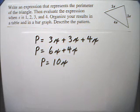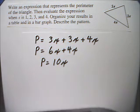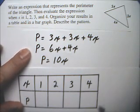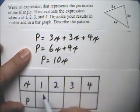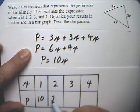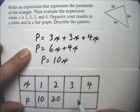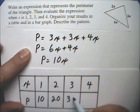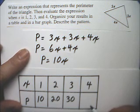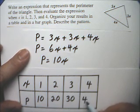So, organize your results in a table. Okay. Well, here's my table. And we said, when x is 1, this is 10. When x is 2, this is 20. When x is 3, this is 30. And when x is 4, this is 40.